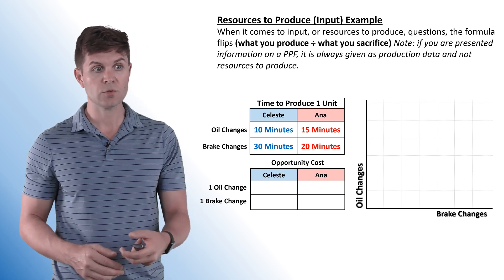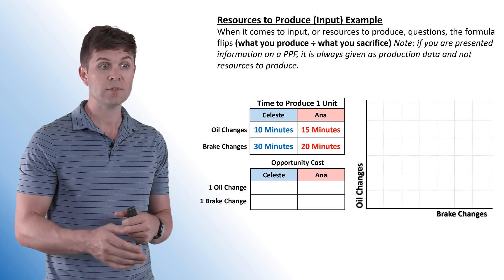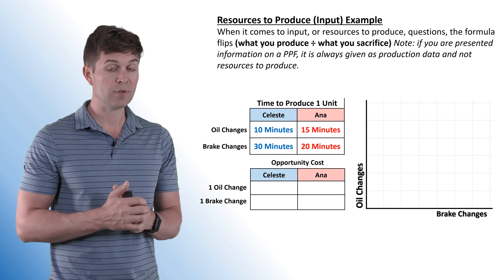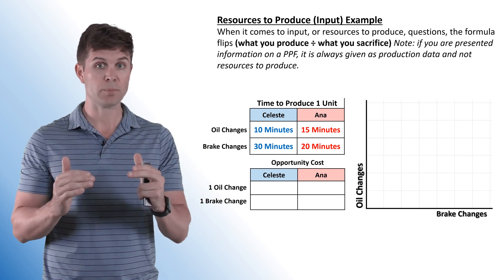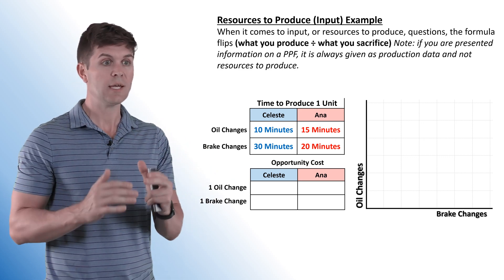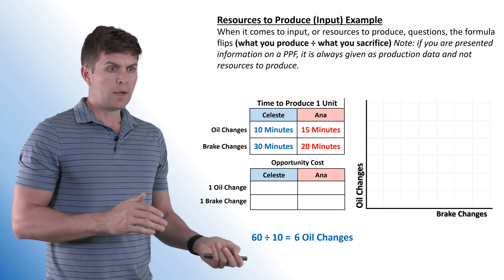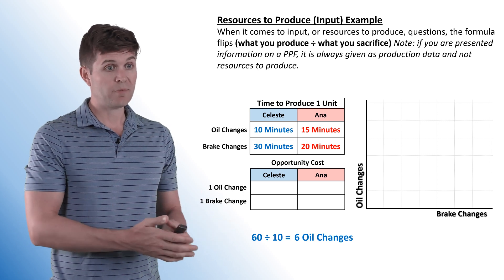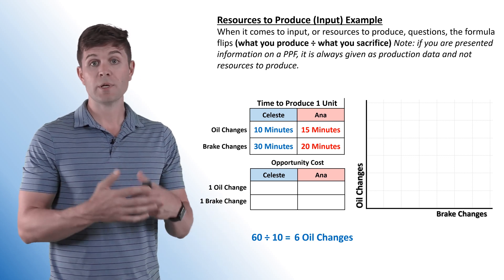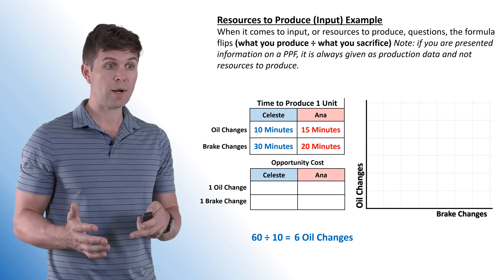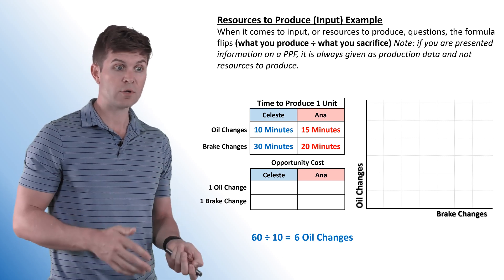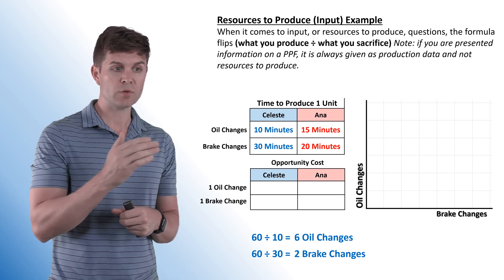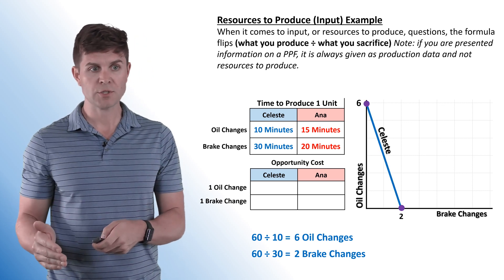Celeste can do an oil change in 10 minutes and a brake change in 30 minutes. To graph the production possibility frontier, we need to figure out the actual output in a given hour. We take 60 minutes divided by the 10-minute oil change and get six oil changes per hour. For brake changes: 60 divided by 30 gives two brake changes per hour. So in one hour she can do six oil changes or two brake changes, and we throw that up on the frontier.